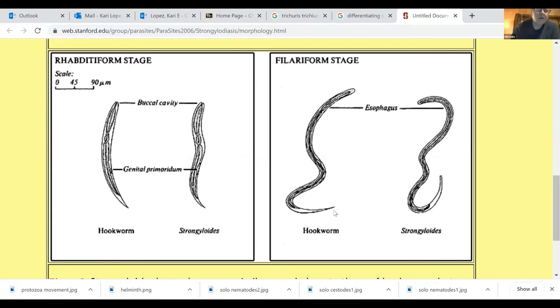And then it also at the filariform stage has the short esophagus. So here's its esophagus. And then your strongoloides is strong and has a long esophagus. It's also your threadworm so it's got the long esophagus that can kind of remind you of a thread. And then your strongoloides has a notch tail, has a notch tail in the filariform.